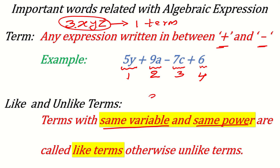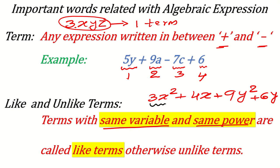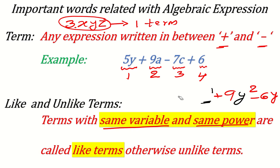Consider the expression 3x² + 4x + 9y² + 6y. Here, 3x² and 4x have the same variable x, but different powers (2 and 1), so they are unlike terms. Similarly, 9y² and 6y share variable y but have different powers, so they are also unlike terms. In this entire expression, no two terms are like terms.